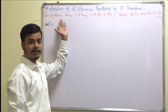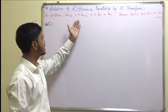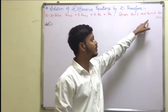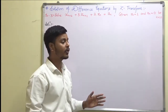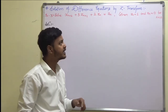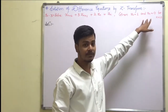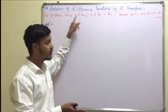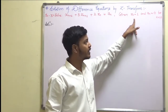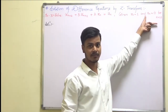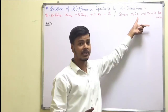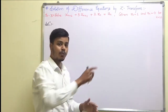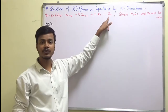Here the third problem: x(n+2) + 3x(n+1) + 2x(n) = u(n), and we are given x0 is 1 and x(n) is equal to 0 for n less than 0. I am calling this problem to be of different variety because here only x0 is given and x1 is not given. Looking at x(n+2), I need x0 and x1, but x1 is not given.